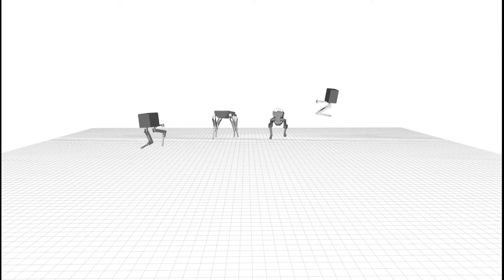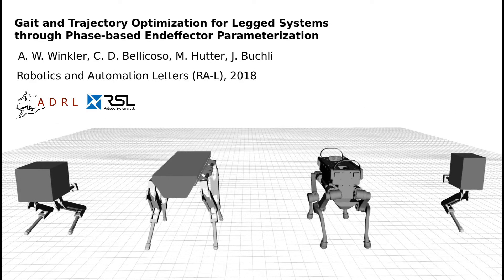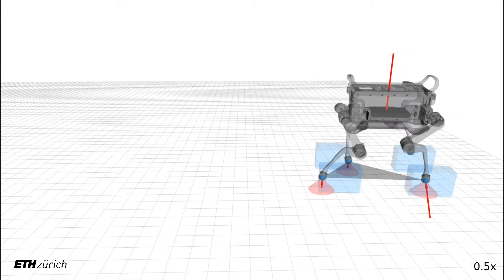We present an algorithm that is able to generate dynamic motions for legged systems of arbitrary number of feet and morphology. We first visualize the optimized motion plans and then demonstrate how to track these in simulation as well as on a real quadruped robot.